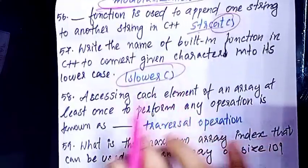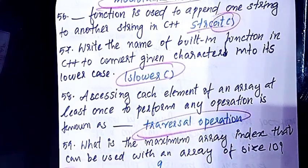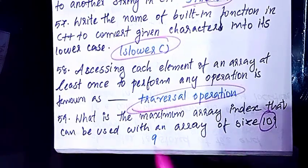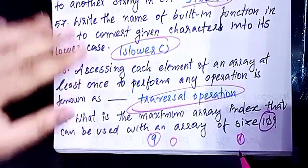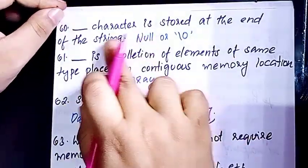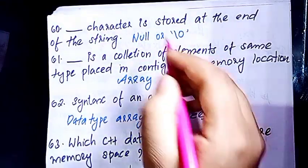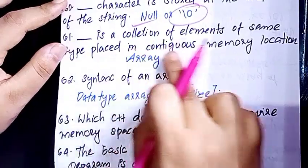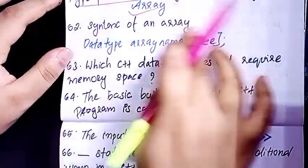The built-in function to convert a given character into lowercase is tolower(). An array can have elements with the same characteristics — the index of an array. This is the memory location and the syntax of an array.